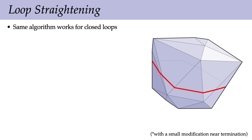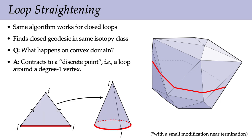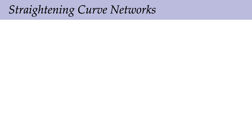The same basic algorithm works for closed loops with just a small modification near termination, giving us a closed geodesic in the same isotopy class as the initial curve. An interesting question is what happens on a convex domain. Generically, convex polyhedra don't have closed geodesic loops, even though smooth convex surfaces do. So what happens is the curve contracts to a discrete point — a loop that just goes around a single degree-one vertex. To make that any shorter, you would just slide it to the end of the cone.